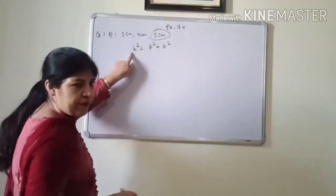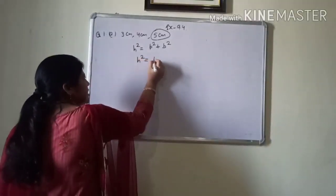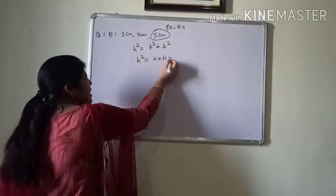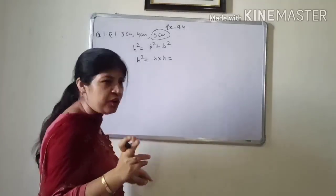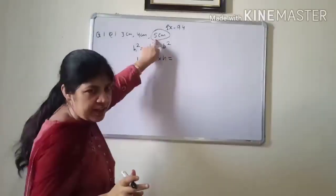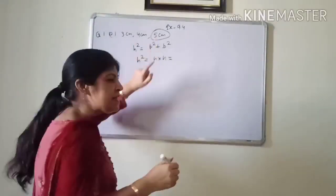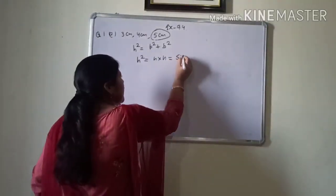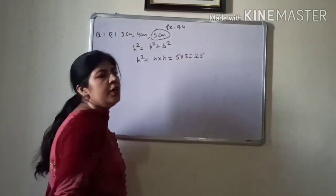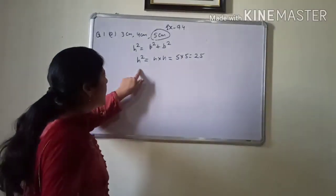So first, left hand side, that is h square. h square means h into h. h means hypotenuse. And we are taking the greatest side is 5, 5 as hypotenuse. 5 into 5, you will get 25.